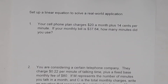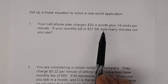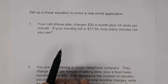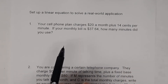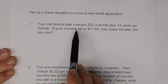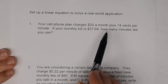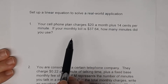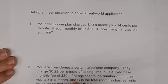In this lesson we're going to learn how to set up a linear equation to solve a real-world application problem. So let's get to number one. You're told that your cell phone company charges $20 a month plus 14 cents per minute. If your monthly bill is $37.64, how many minutes did you use?